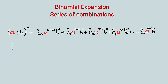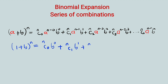So this will become 1 plus b raised to the power of n, which is equal to nC0 times b to the power of 0 — because a is equal to 1 and 1 to the power of anything will be equal to 1. Then the second term is nC1 times b to the power of 1, then nC2 times b to the power of 2, nC3 times b to the power of 3, and after that is nCn times b to the power of n.